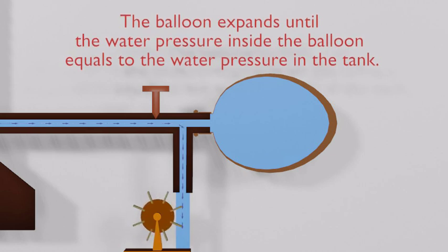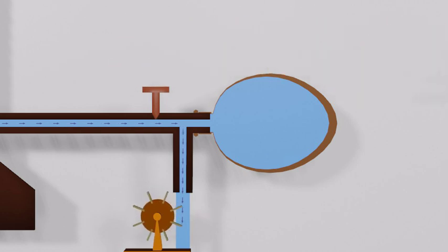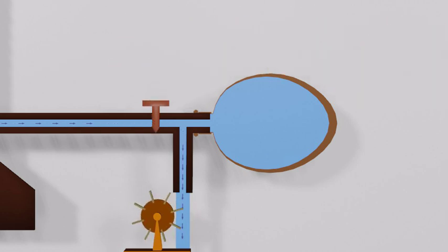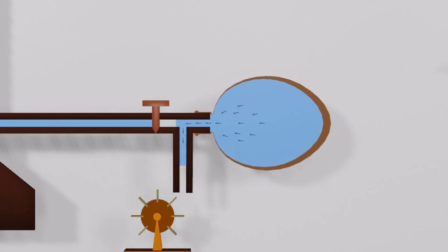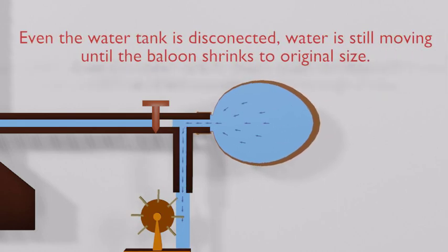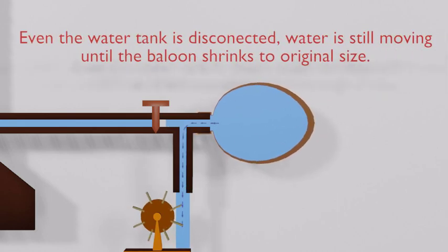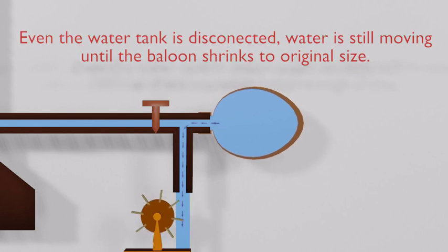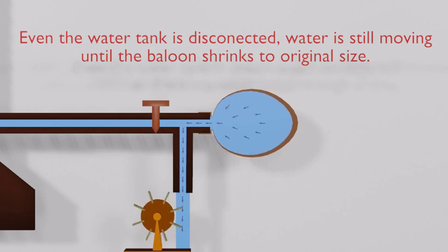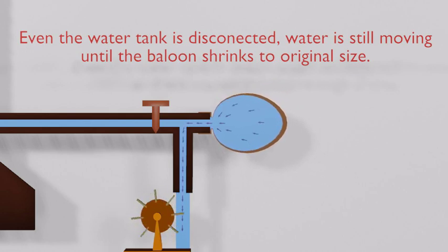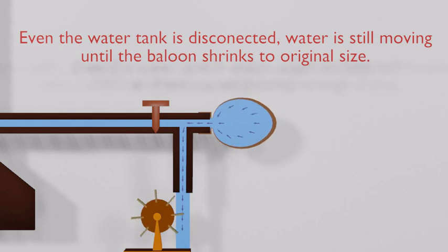Let's close the valve and disconnect the water tank. What is happening? The water is still moving until the balloon shrinks to its original size, because the water pressure inside the balloon pushes the water out. This is what happens in the capacitor.